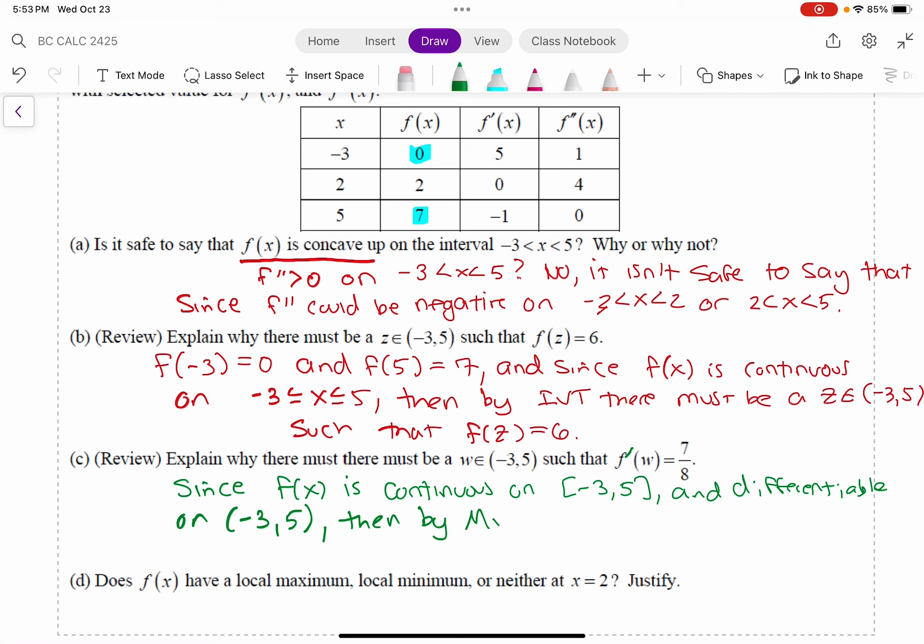there exists a w in the interval negative 3 to 5, such that. And now I'm just going to compute the slope, right? I'm going to say, such that f prime of w is equal to, and now I'm just going to compute the slope between the two endpoints.